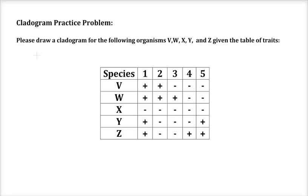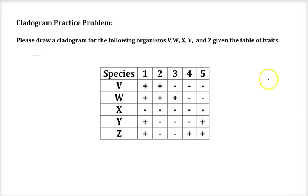I'm going to go over a cladogram practice problem — something like you'll see on your test. Given a set of traits for these five different species, I want to come up with a hypothesis, a diagram we call a cladogram, that helps us see how these species may have evolved and what their most common ancestors are.